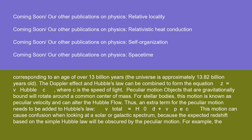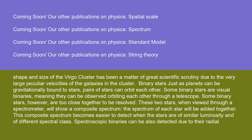The Doppler effect and Hubble's law can be combined to form the equation z = V_Hubble/c, where c is the speed of light. Peculiar motion: objects that are gravitationally bound will rotate around a common center of mass. For stellar bodies, this motion is known as peculiar velocity and can alter the Hubble flow. Thus, an extra term for the peculiar motion needs to be added to Hubble's law: V_total = H₀d + V_peculiar. This motion can cause confusion when looking at a solar or galactic spectrum, because the expected redshift based on the simple Hubble law will be obscured by the peculiar motion. For example, the shape and size of the Virgo cluster has been a matter of great scientific scrutiny due to the very large peculiar velocities of the galaxies in the cluster.